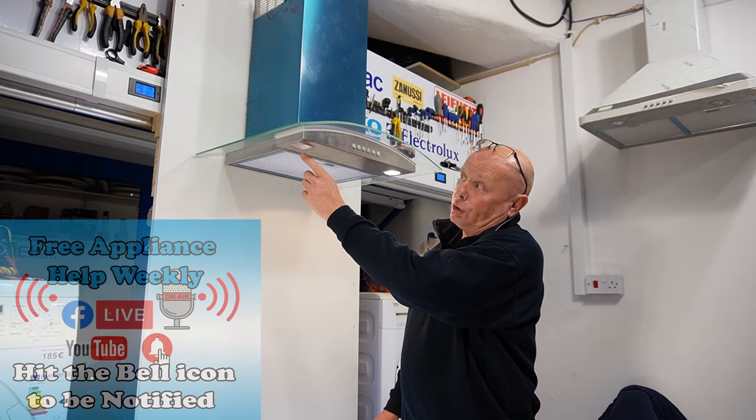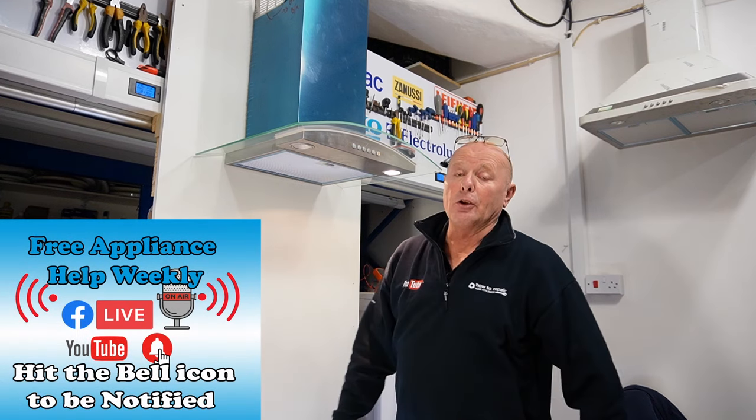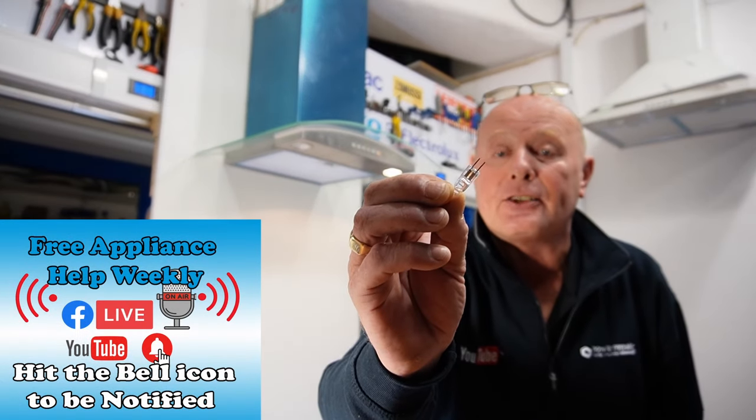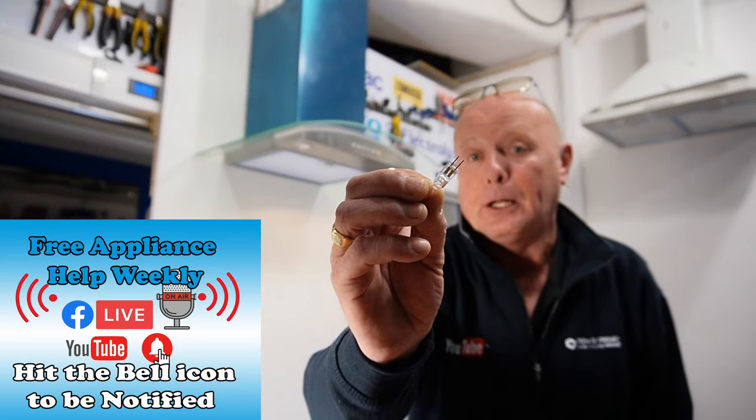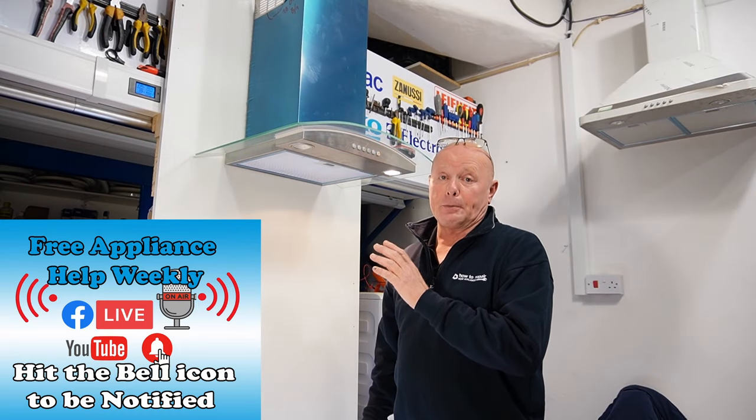Here you can see the cooker hood light bulb is not working. The bulb we will be replacing is a G4 2 pin 20 watt bulb. These are very easy to replace.